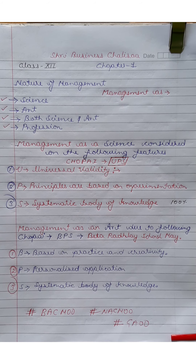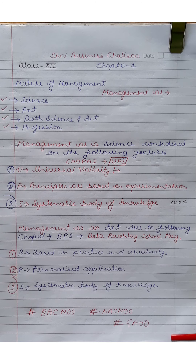We can finally say that out of 3 features, 2 features of science do not fully match management, and 1 feature matches 100%. So the question — is management exactly science? Out of 3 features, 1 feature fully qualifies as science, and 2 features are partially science.